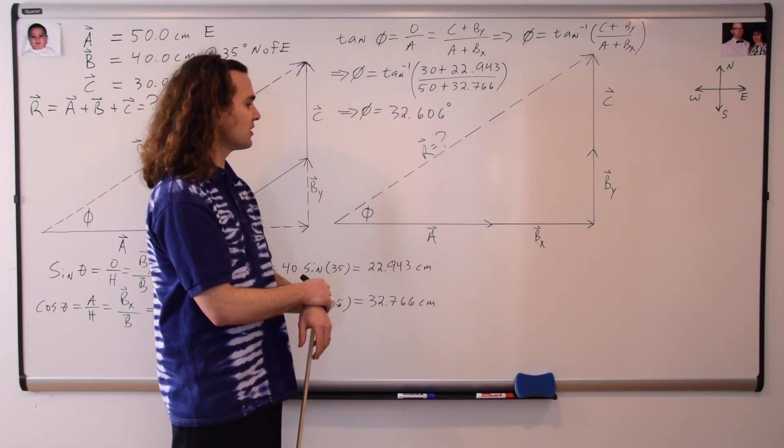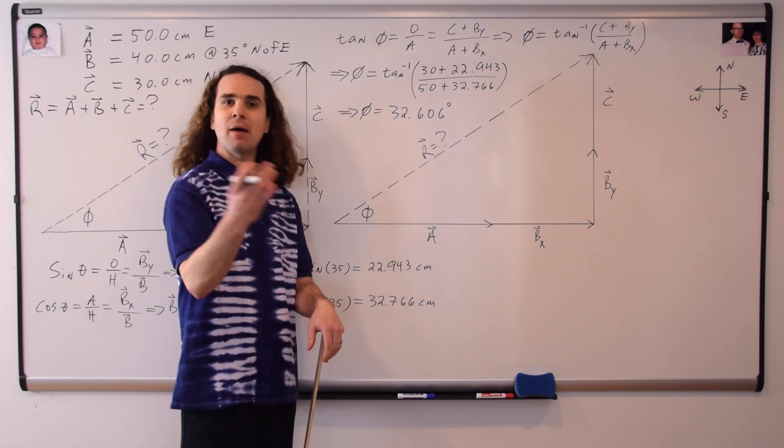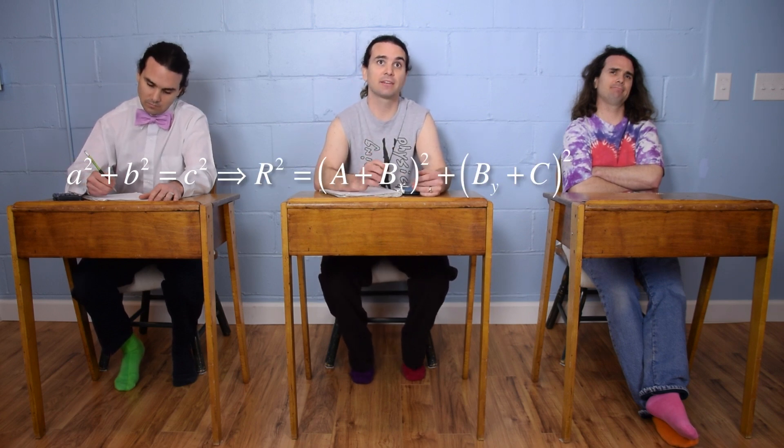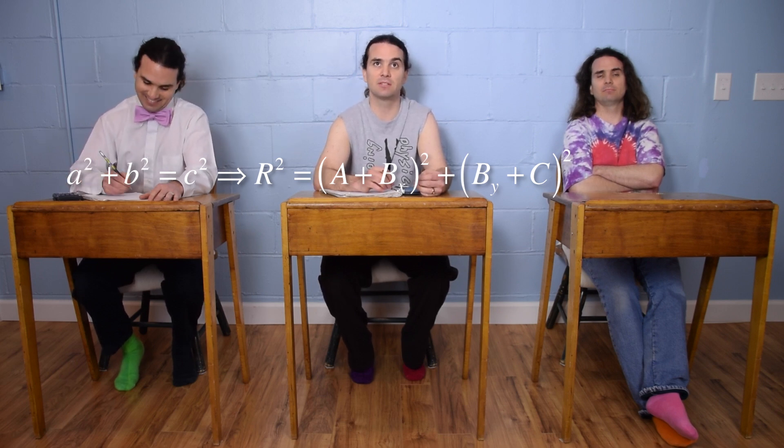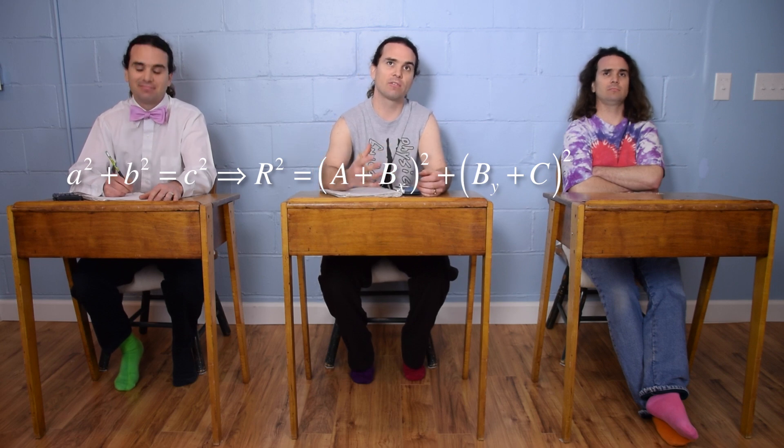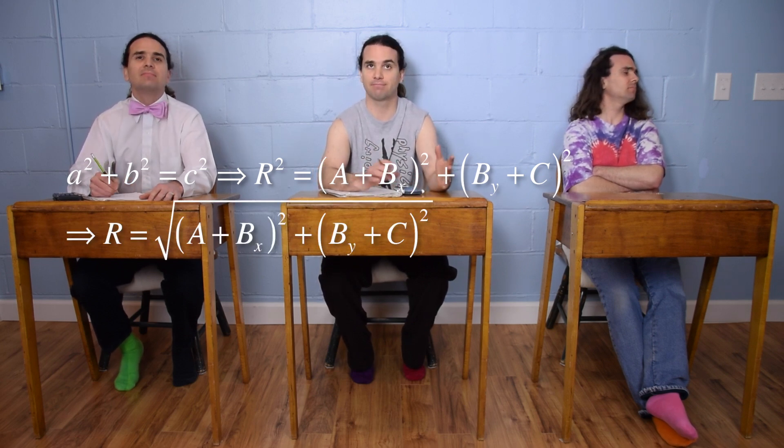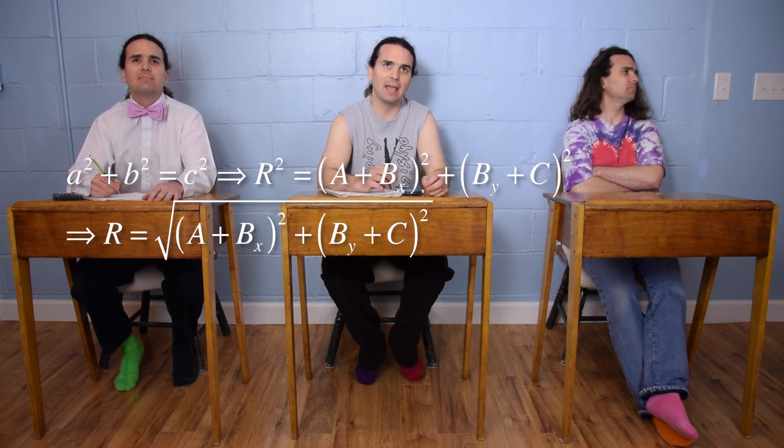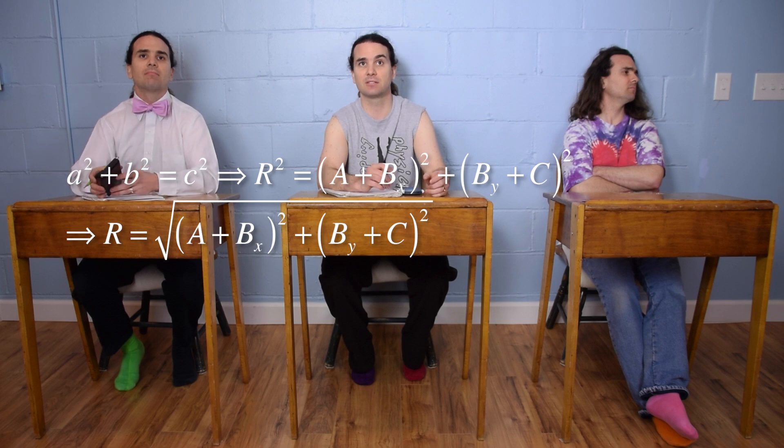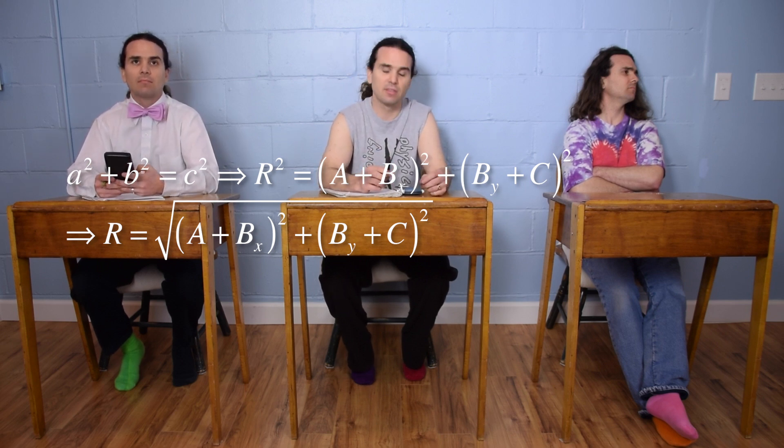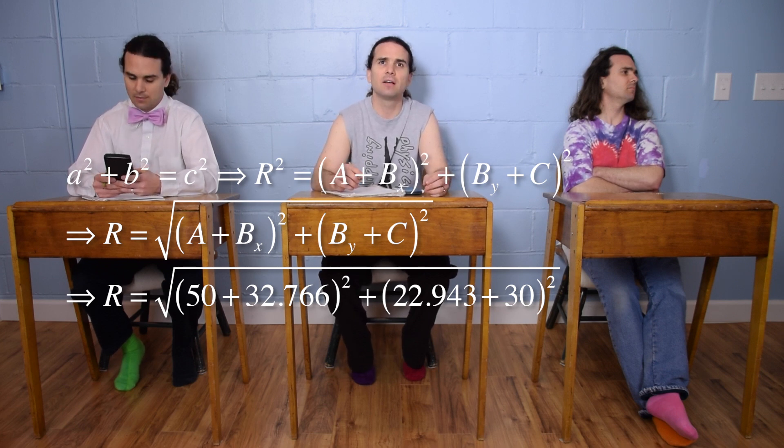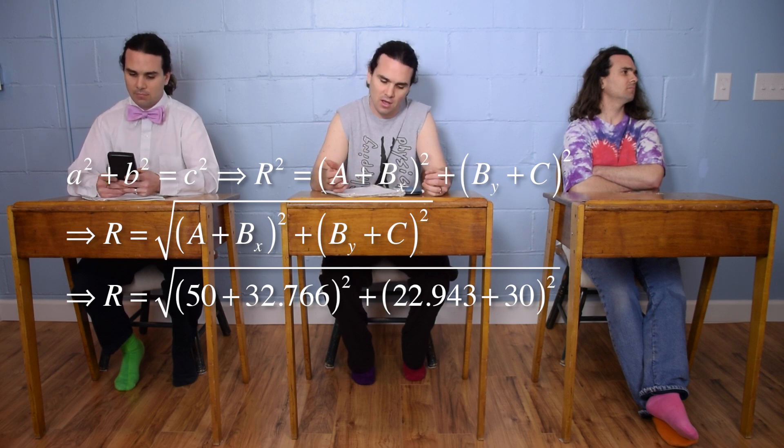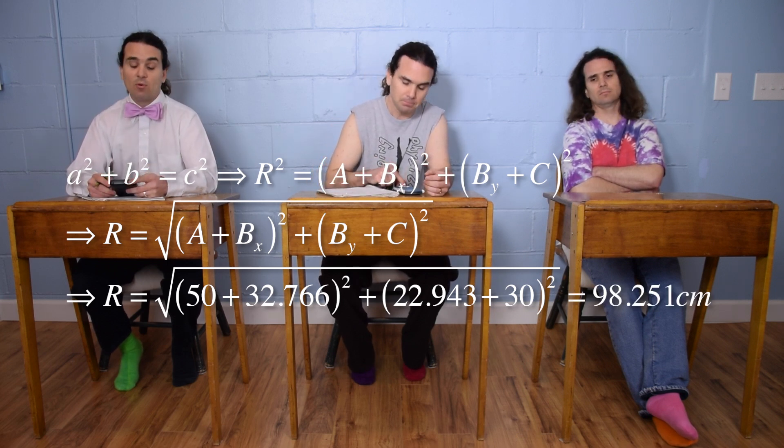Yep, the angle of 32.606 degrees will give us the direction, and now we need the magnitude. Bobby, could you please find the magnitude? We can use the Pythagorean theorem, so A squared plus B squared equals C squared, or the resultant vector squared equals the quantity of A plus B in the x direction squared, plus the quantity B in the y direction plus C squared. Taking the square root of the whole equation gives us the resultant vector equals the square root of the quantity of A plus B in the x direction squared, plus the quantity B in the y direction plus C, that quantity squared, with numbers that is the square root of 50 plus 32.766 squared plus 22.943 plus 30, that quantity squared, which works out to be 98.251 centimeters.